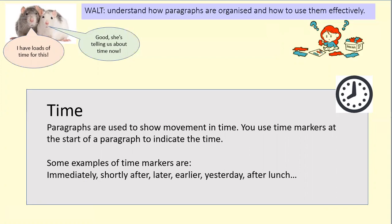Paragraphs are used to show the movement in time and use time markers, usually at the start of the paragraph, to indicate that shift in time. Some examples of time markers are: immediately, shortly after, later, earlier, yesterday, after lunch. Time markers are going to be really useful when you are writing your diary entries, because they will help the reader move along with you and realize when each action or thought process happened.